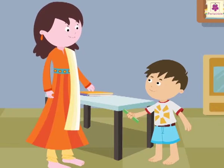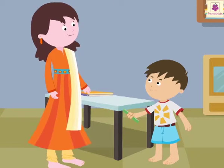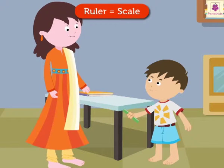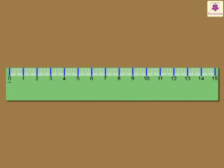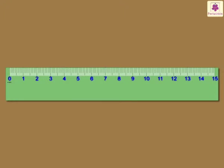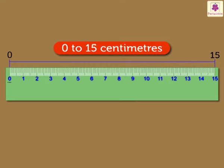Mom, isn't a ruler also called a scale? Yes dear, a ruler is also called a scale. And what are these markings on it? These markings indicate the centimeters. We can measure the length of any object in centimeters. Here, the numbers 0 to 15 show 0 to 15 centimeters.